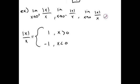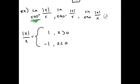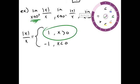So, if we're coming from the right, then we're coming from where x is greater than 0. And we can show this graphically.